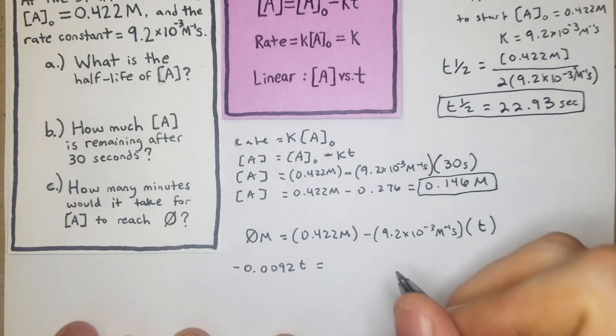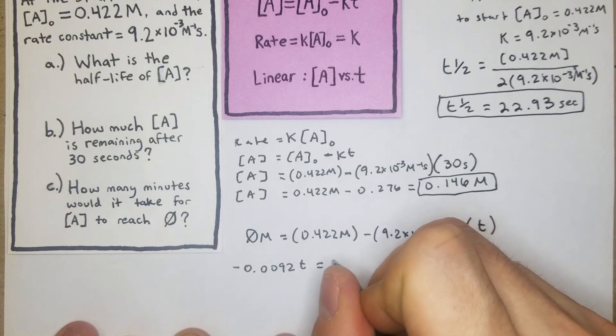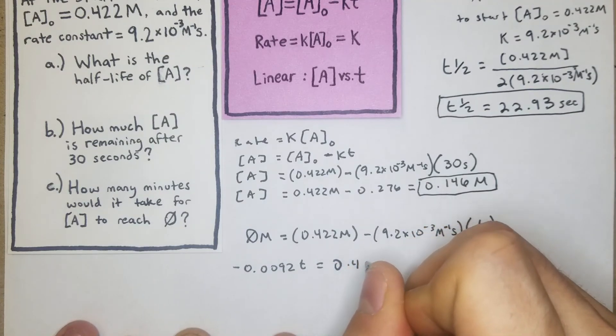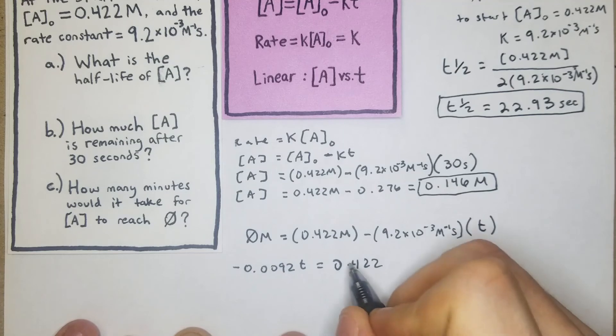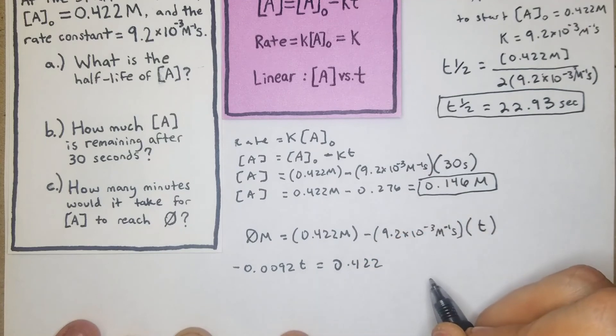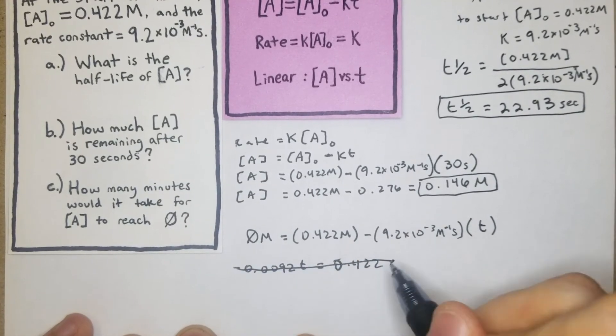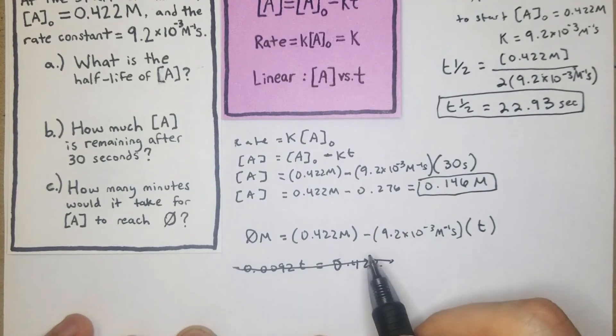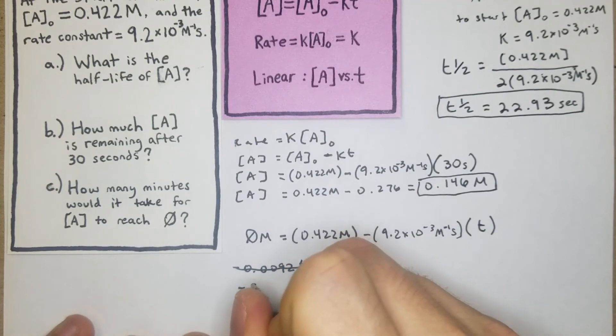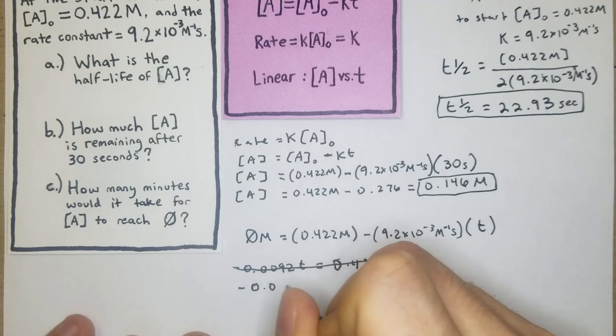We moved the 9.2 × 10⁻³ t over to the opposite side. Now we're going to, we can move the 0.422 over too. Actually there's an easier way to do this here. So what we're going to do is we're just going to flip the entire equation.